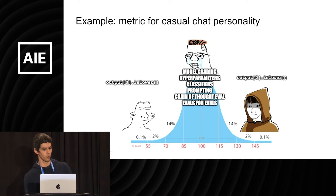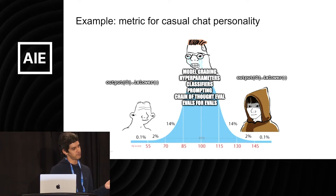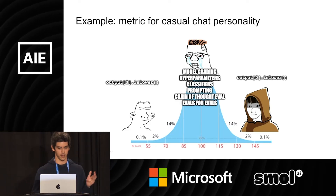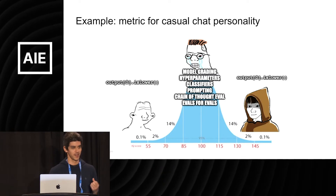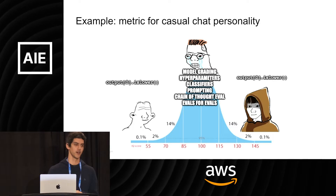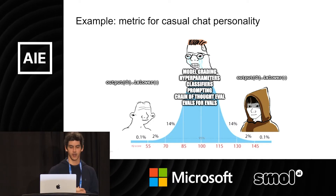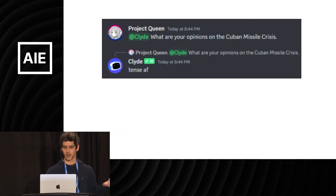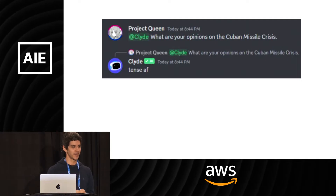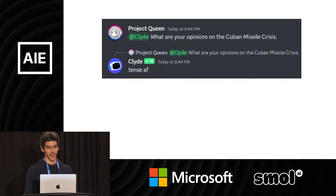Let me give you an example. Let's say we wanted to measure a casual chat personality, which is something we wanted to do at Discord with LLMs. You might say, oh, that sounds like something I need an LLM grader for — maybe I'll measure hyperparameters, tune the temperature, train a classifier. Actually, what worked well for us is just checking that the output begins with a lowercase letter. Simple, runs really quick, is deterministic, and gets us more than 80% of the way there for 1% of the work. That resulted in all these delightful interactions that made users happy.